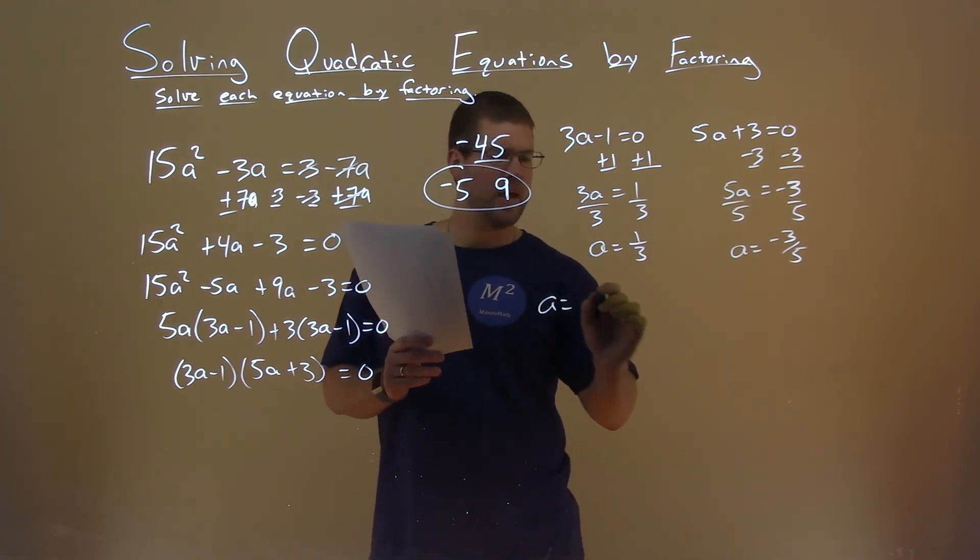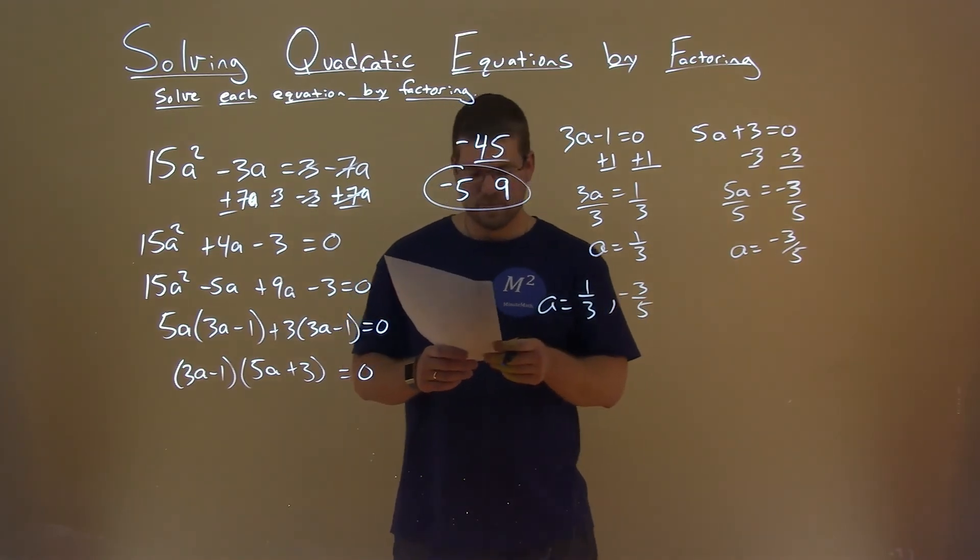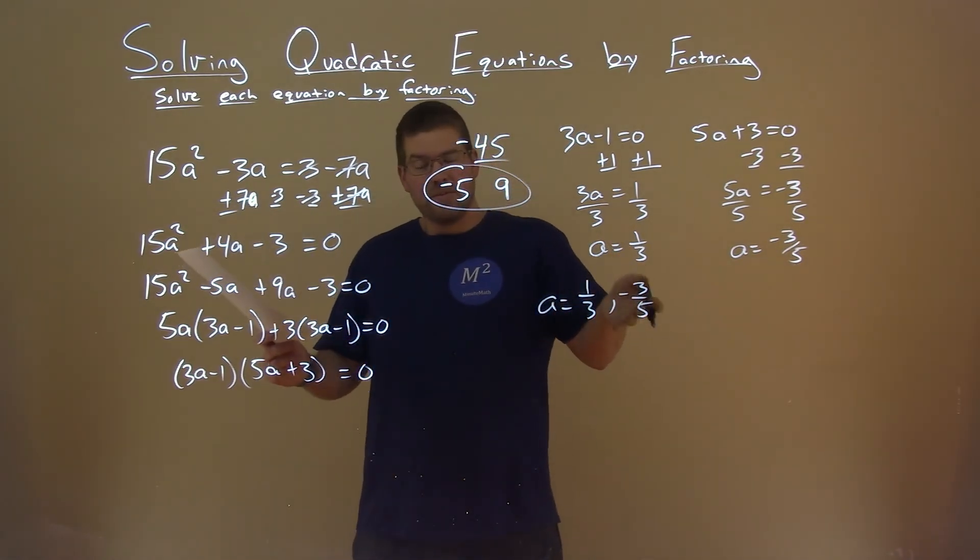So we have two solutions here: a equals 1/3 and -3/5. And that is, after all of this, our final answer.